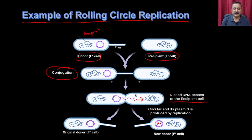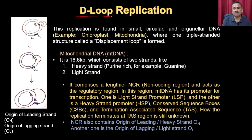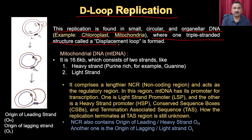Apart from the rolling circle model, there is another kind of replication mode called D-loop formation or D-loop replication. This replication is found in small circular organelle DNA — for example, in chloroplasts and mitochondria. Although chloroplasts and mitochondria are present within eukaryotic cells, they are prokaryotic in origin and follow many features of bacterial cells, including having circular DNA. In D-loop replication, a triple-stranded structure called a displacement loop is formed.